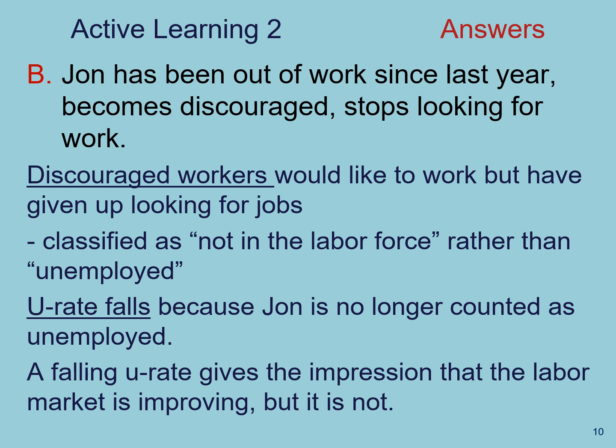In scenario B, John has been out of work since last year and becomes discouraged and stops looking for work. John can be classified as a discouraged worker — one who would like to work but has given up looking for jobs. In this case, we classify John as not in the labor force rather than unemployed, because he is currently not seeking a job. So the unemployment rate falls because John is no longer counted as unemployed. But this falling unemployment rate gives the impression that the labor market is improving, when it actually is not. This is one of the things that happened during the 2008 Great Recession, where labor market signals were confusing: a sharp increase in the unemployment rate at the same time as a sharp decrease in the labor force participation rate, making the unemployment rate uninformative.